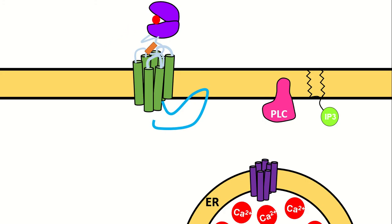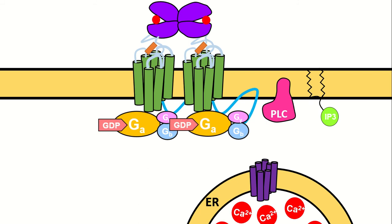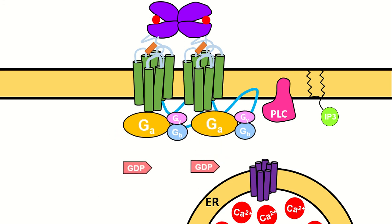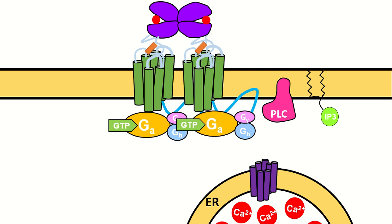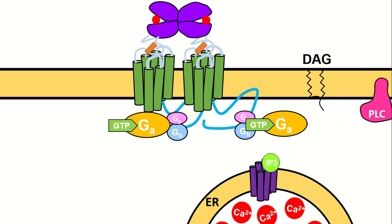Upon glutamate binding, MGluR5 dimerizes and preferentially binds G-protein Gq11, causing a conformational change which leads to the exchange of GDP for GTP in the alpha subunit of the G-protein. The GTP-bound alpha subunit disassociates from the beta-gamma subunit and diffuses across the plasma membrane to activate phospholipase C. Phospholipase C in turn hydrolyzes PIP2, a membrane-bound phospholipid, to form IP3 and DAG.